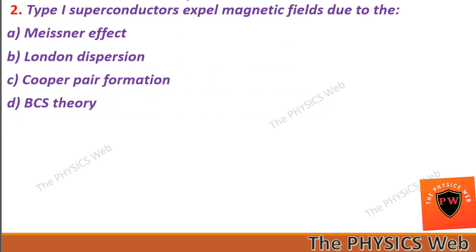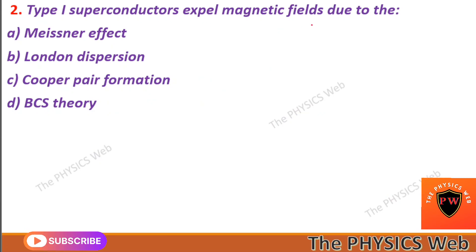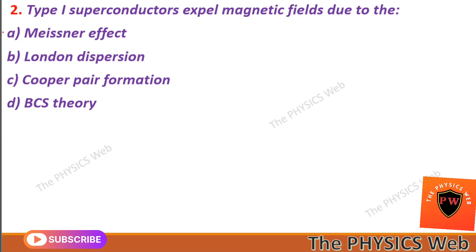Next, question two: Type-1 superconductors expel magnetic fields due to the Meissner effect. So A is your correct option.